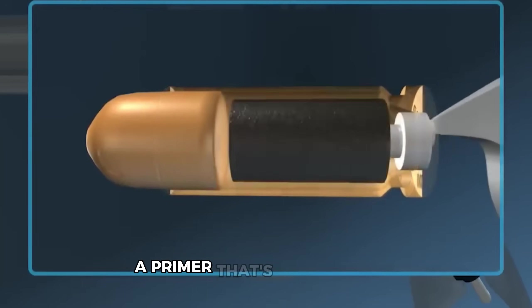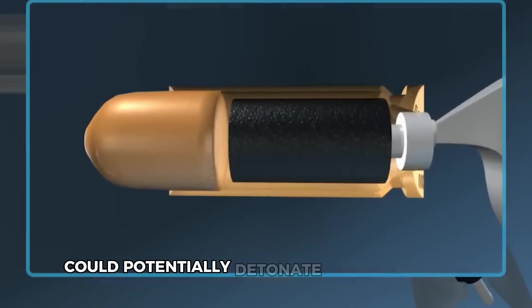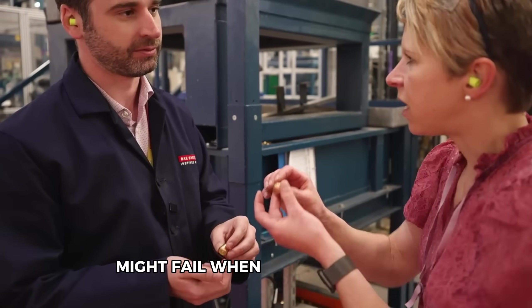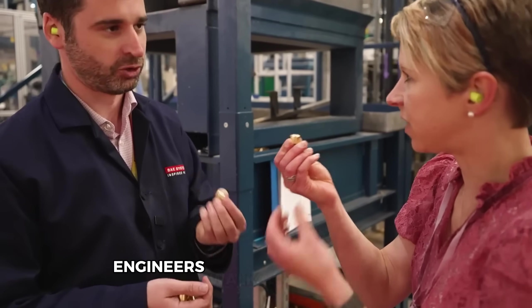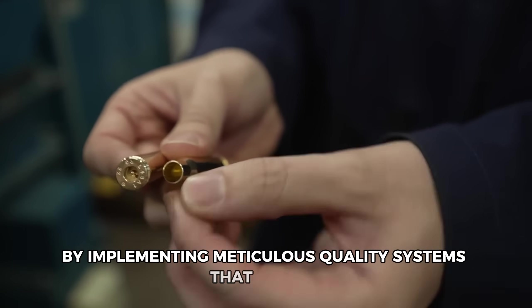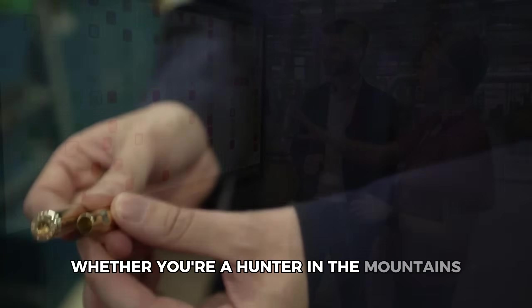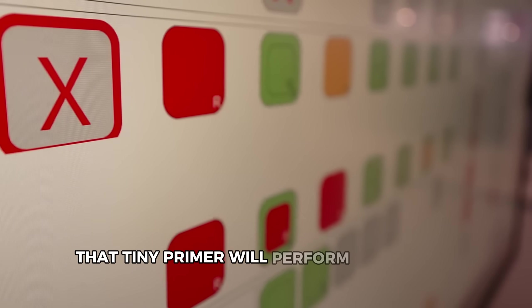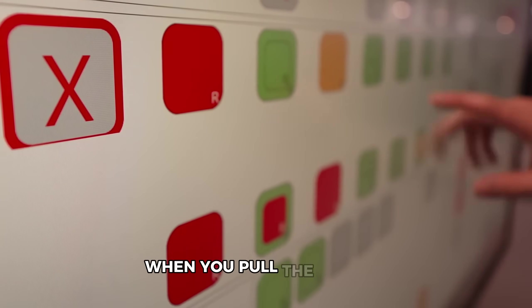The stakes are incredibly high in this part of the factory. A primer that's too sensitive could potentially detonate during shipping, while one that's not sensitive enough might fail when you need it most. Engineers walk this delicate line by implementing meticulous quality systems that ensure whether you're a hunter in the mountains or in a self-defense situation, that tiny primer will perform exactly as expected when you pull the trigger.